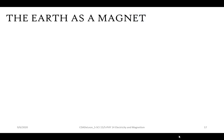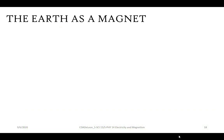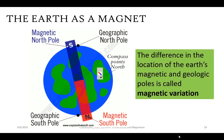Now let's discuss Earth as a magnet. A compass needle does not point exactly to the geographic poles — it points to the magnetic poles. Magnetic declination or magnetic variation is the angle on the horizontal plane between magnetic north and true north. This angle varies depending on the position on the Earth's surface and changes over time.